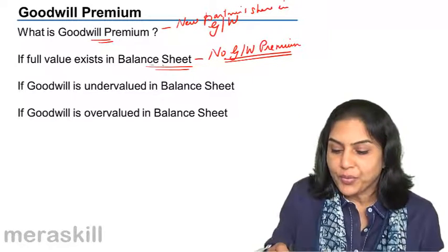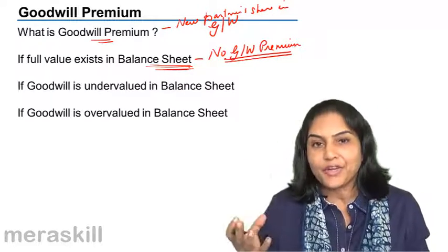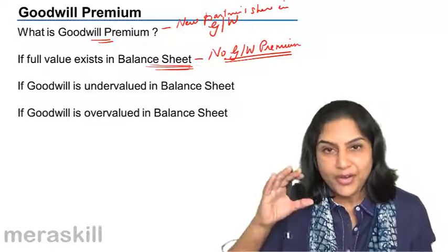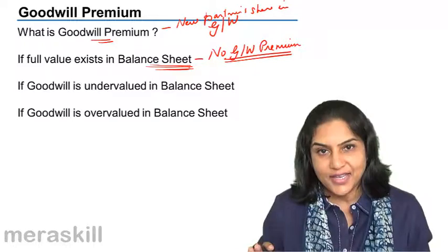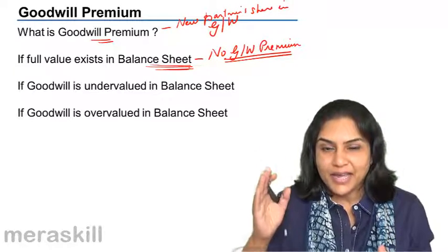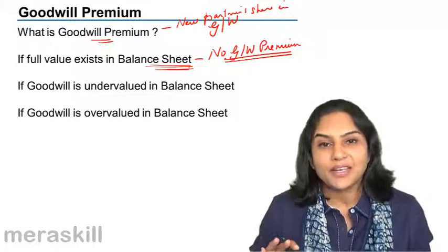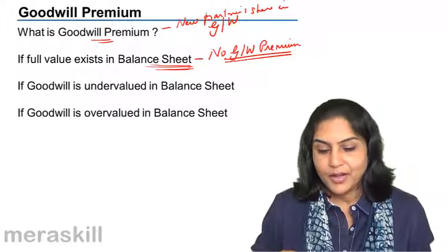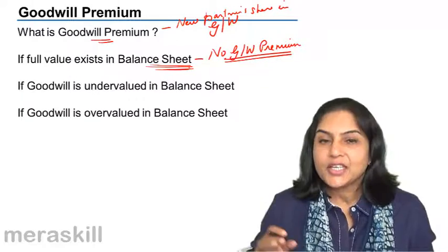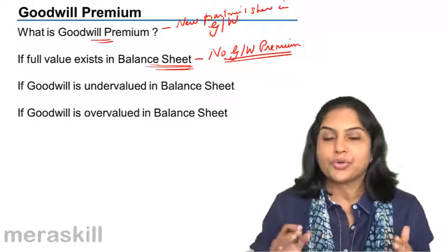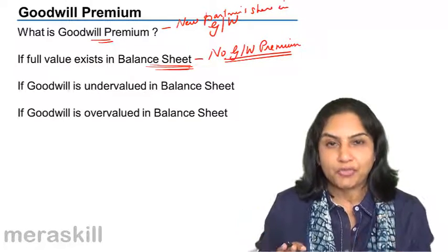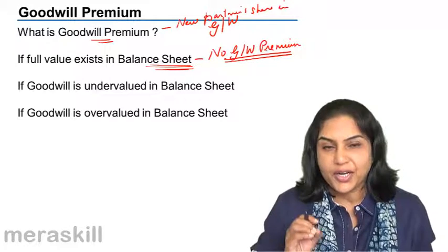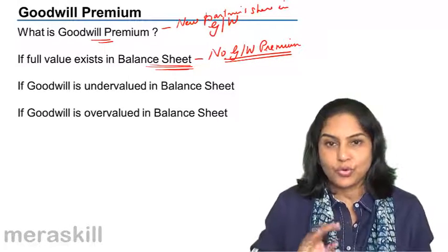If the full value exists in the balance sheet, the benefit of that goodwill is already reflected in the capital accounts of the partners. If goodwill already exists in the balance sheet like all other assets, the net worth of the business — assets minus liabilities — is the old partners' capital accounts. So if goodwill is valued at 5 lakh and there is goodwill of 5 lakh in the balance sheet, no goodwill premium needs to be brought in by the new partner.